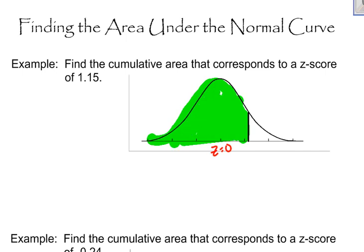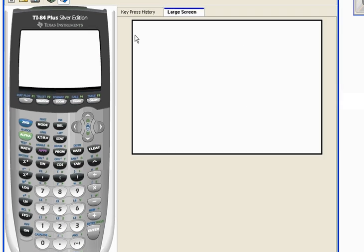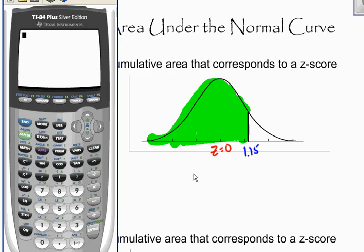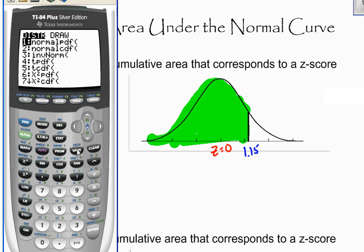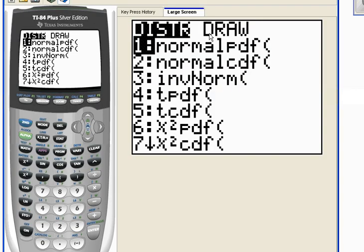Let me go ahead and finish this picture. My z-score of 1.15 is right here. I'm going to use my calculator to find this — there are other ways, you can use tables, but I'm going to show you how to do it on the calculator. If you hit second and then VARS for variables, it takes you to a menu that gives you different normal applications or normal functions. If we scroll down to number two, normalCDF, that's what I'm going to use.